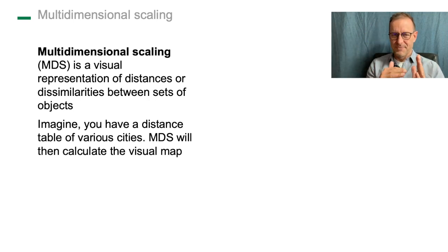A distance matrix - you find all the cities listed in the lines and in the columns, and then you could tell, okay, what is the distance between Munich and Berlin? And then you get a number written in the cell. Now assume you have this one but you do not have a map, you just have the distance matrix. What multidimensional scaling does is it creates the map.